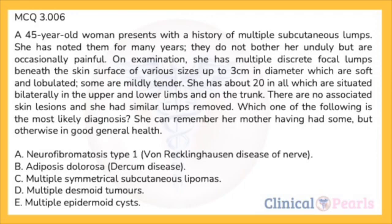Next: a 45-year-old woman presents with a history of multiple subcutaneous lumps noted for many years, occasionally painful. On examination she has multiple discrete, soft, lobulated focal lumps beneath the skin surface of various sizes up to 3 cm in diameter, some mildly tender — about 20 in all, situated bilaterally in the upper and lower limbs and trunk. No associated skin lesions; similar lumps removed previously; mother had some similar ones. Which is the most likely diagnosis? A: neurofibromatosis type 1. B: adiposis dolorosa. C: multiple symmetrical subcutaneous lipomas. D: multiple desmoid tumors. E: multiple epidermoid cysts.